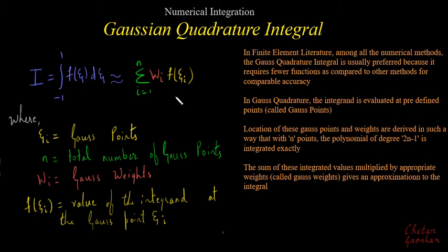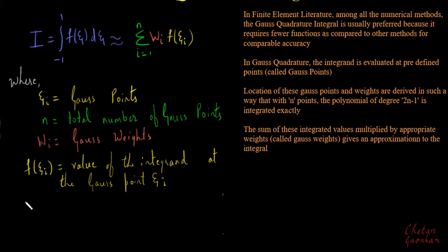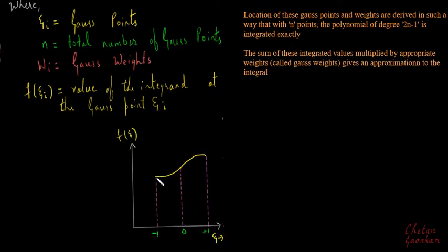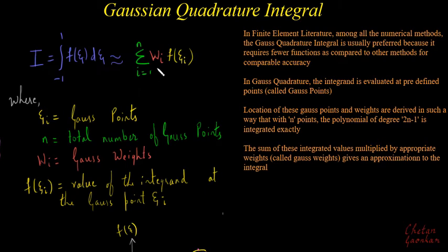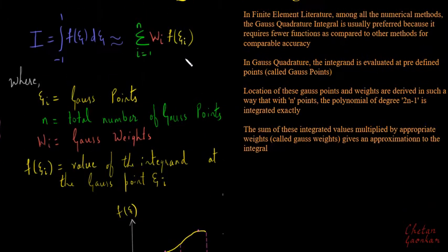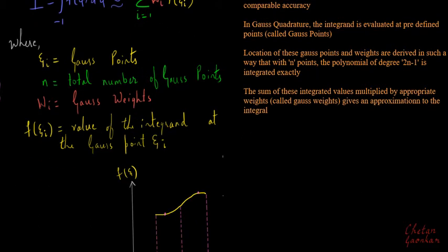To understand this better: we have a function f(ξ) going from minus one to plus one. We evaluate f(ξ) not over the entire domain but only at some specific points within this domain — say this point, or this point, or this point. At those points we evaluate f(ξ), multiply by corresponding weights, and sum them up. The Gauss point values (ξ) and weight values are summarized in a table.